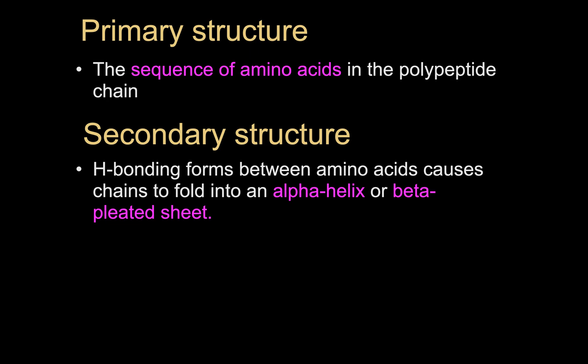The secondary structure is a shape resulting from the folding of the primary structure. So it builds on the primary structure. And you can form two different kinds of shapes from the original amino acid chain. And those are referred to as an alpha helix or a beta pleated sheet. In order to form these, we have hydrogen bonds formed between the amino acids that cause the chains to fold into a different shape.